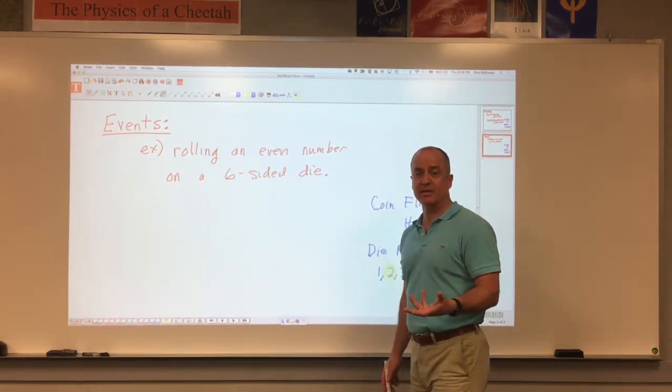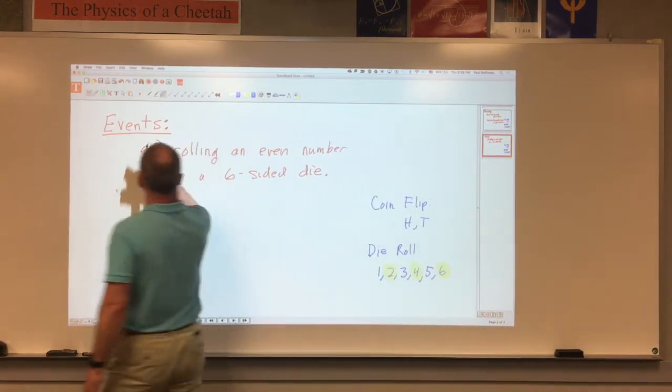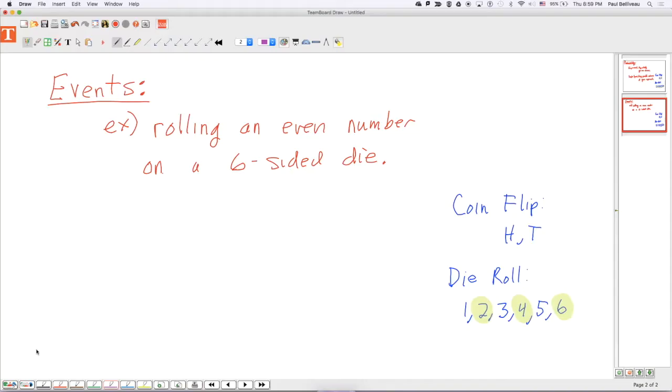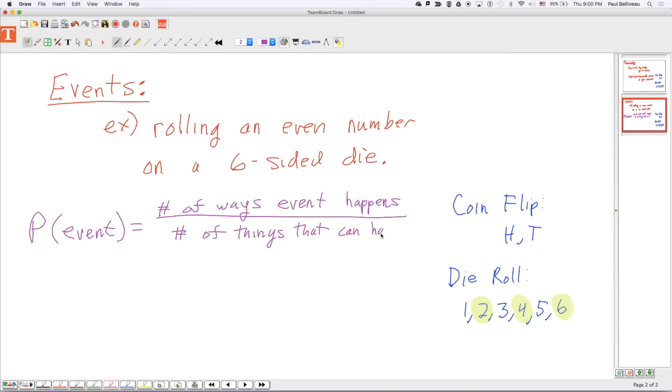Well, let's see. The probability of an event is a fraction, like I said, and it's equal to the number of ways the event can happen, divided by the number of things that can happen.